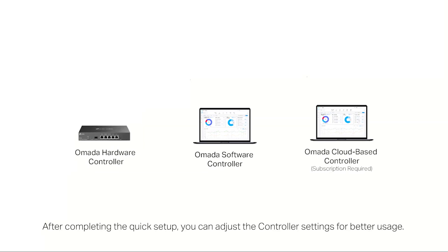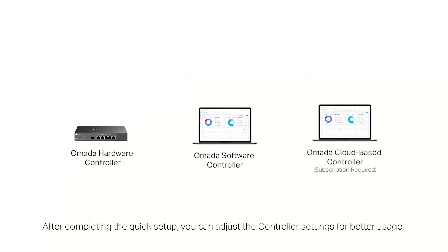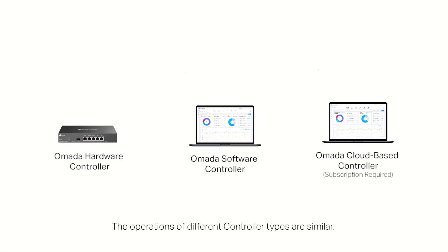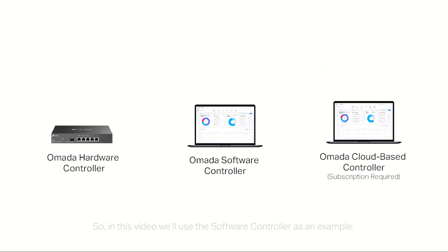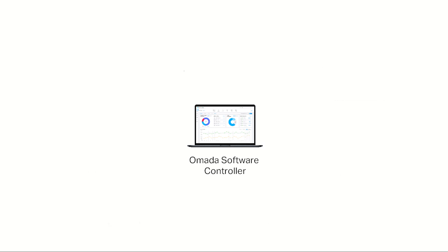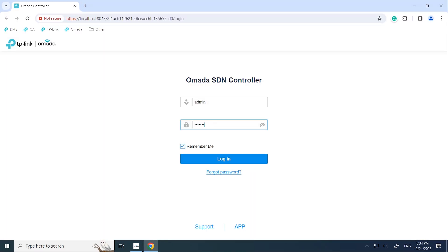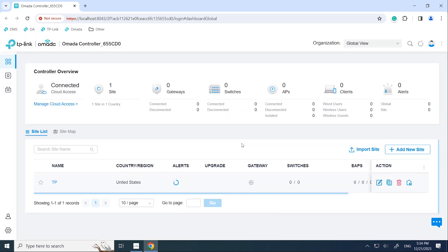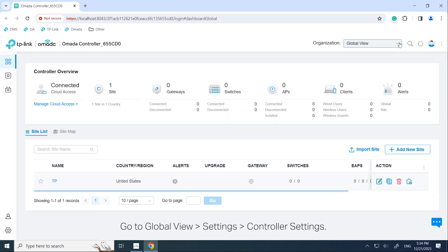After completing the quick setup, you can adjust the controller settings for better usage. The operations of different controller types are similar, so in this video we'll use a software controller as an example. Launch your controller, go to Global View Settings, then Controller Settings.